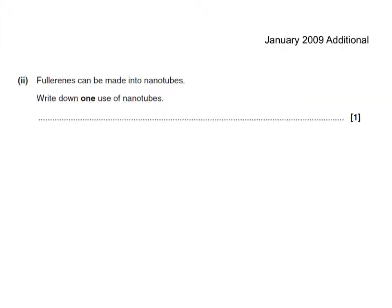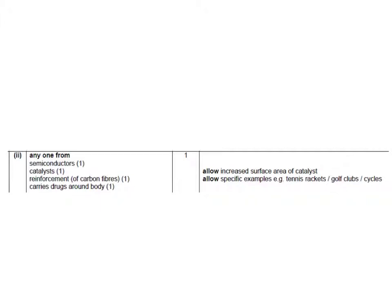Here's another question about fullerenes. They can be made into nanotubes. Write down one use of nanotubes. We'll use the one which is on the specification: they can be used as semiconductors. Remember that the two on the specification are that nanotubes are used as semiconductors because they conduct electricity, or they can be used for strengthening tennis rackets because they're strong. However, there are other acceptable answers — they can be used as catalysts, and they can also be used in drug delivery systems, not even on the syllabus, but it's there on the acceptable answers.